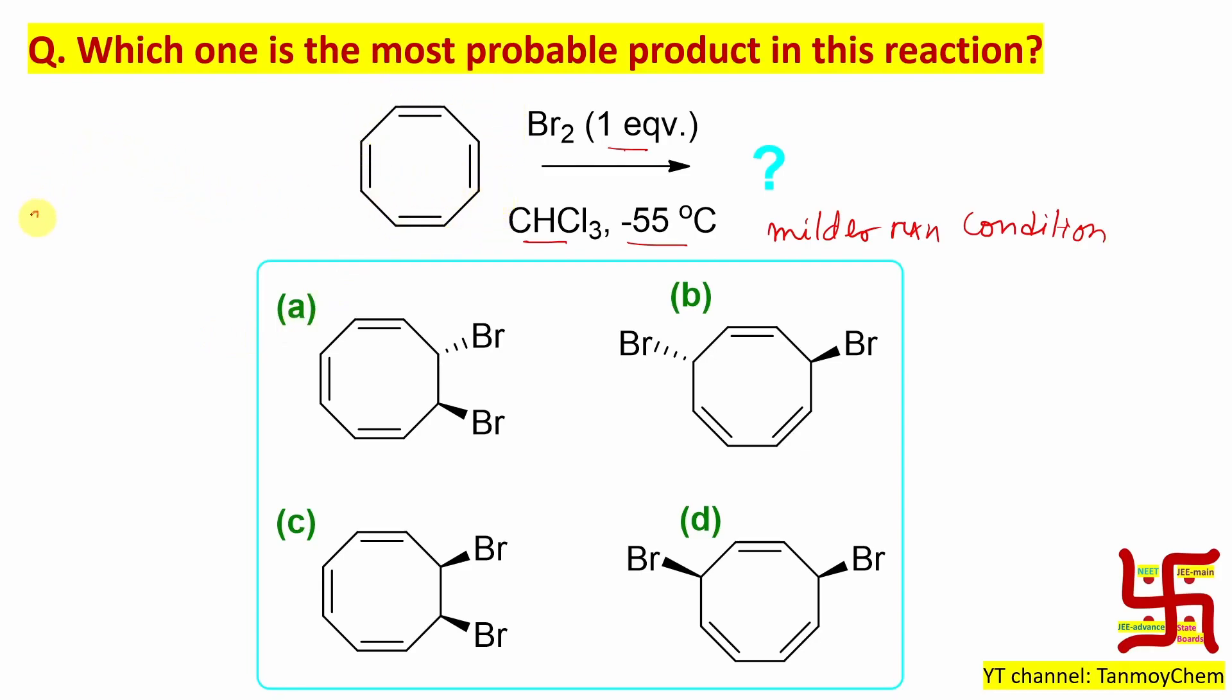This molecule name is cyclo because it is a ring compound, cycloocta - 8 carbons there, tetra - actually four double bonds are there. That's why tetraene, cyclooctatetraene or in short, COT.